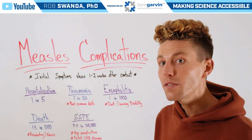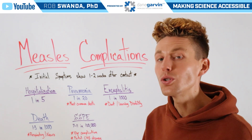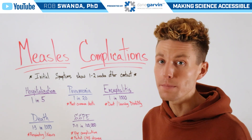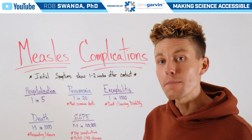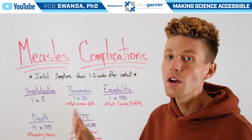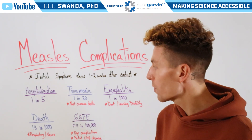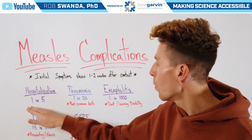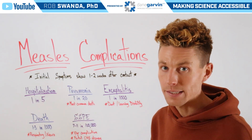An individual will start to see symptoms about 1-2 weeks after their initial contact with the measles virus, and then they may begin experiencing some of these complications from those symptoms. The first would be hospitalization, which occurs in 1 out of every 5 measles cases.